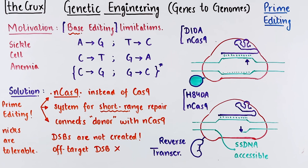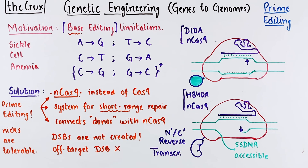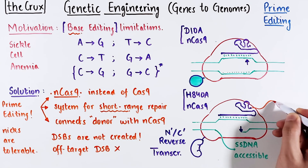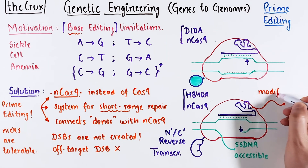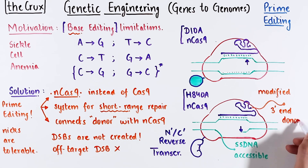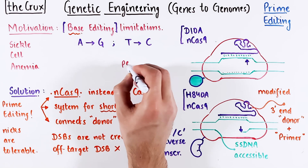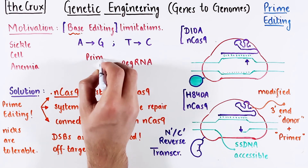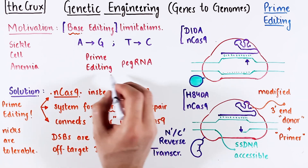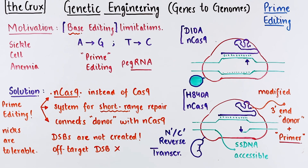The reverse transcriptase can be fused with either of the nCas9 terminals, depending on the version of prime editor used. Prime editing has one new feature: the guide RNA contains a modified, or extended, 3' end. This extension contains the so-called donor or template, and a primer binding site. For this reason, this modified guide RNA is called the PEG RNA, which stands for Prime Editing Guide RNA. It is called 'Prime' because of this primer binding portion in the guide RNA.